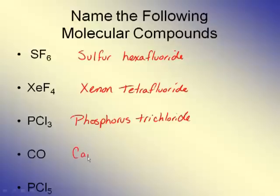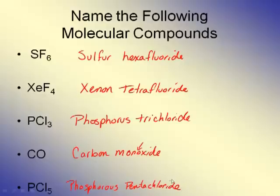CO. Our favorite silent killer. Carbon monoxide. This is a situation where you drop off the double O, because otherwise it would be monooxide, and that would just look weird. And then PCl5 would be phosphorous pentachloride.